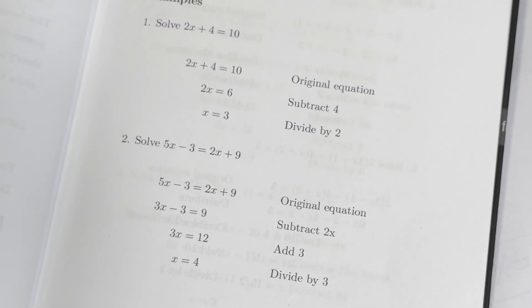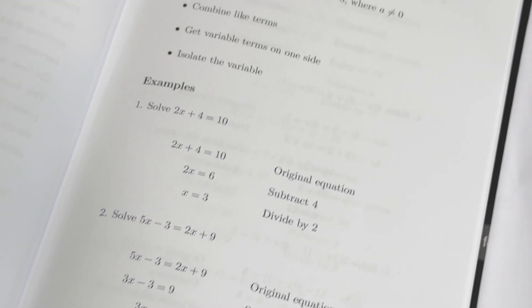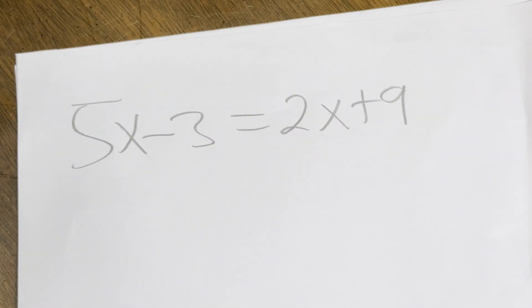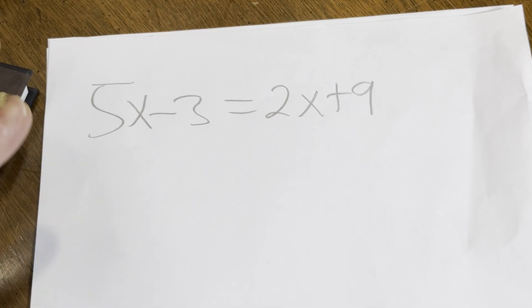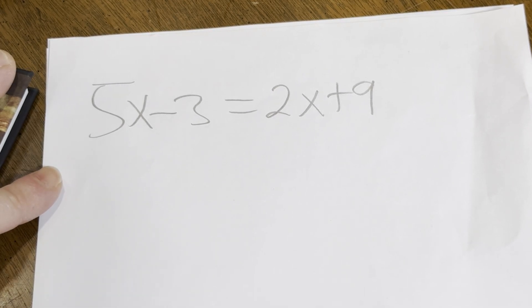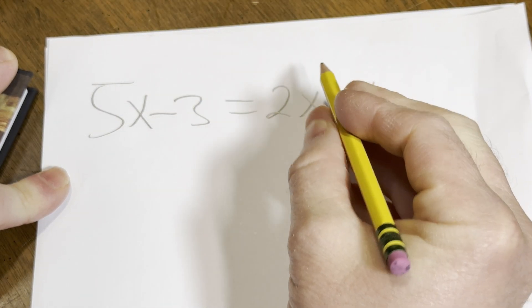As you can see, all the steps here are in the book. I thought I should make a video and just go over and talk through it, just in case you're still having a hard time. So 5x minus 3 equals 2x plus 9. We can do this in multiple steps or in one step. Let's do it in multiple steps.